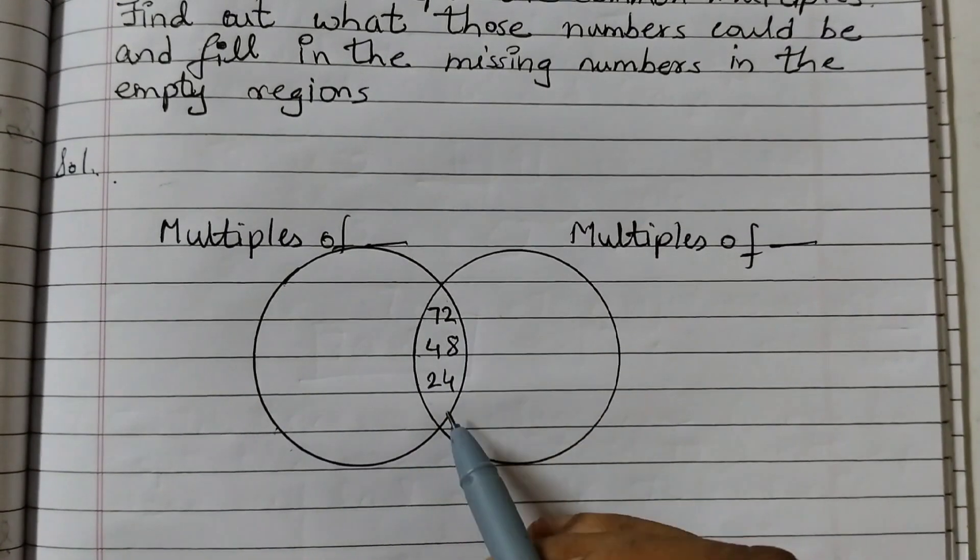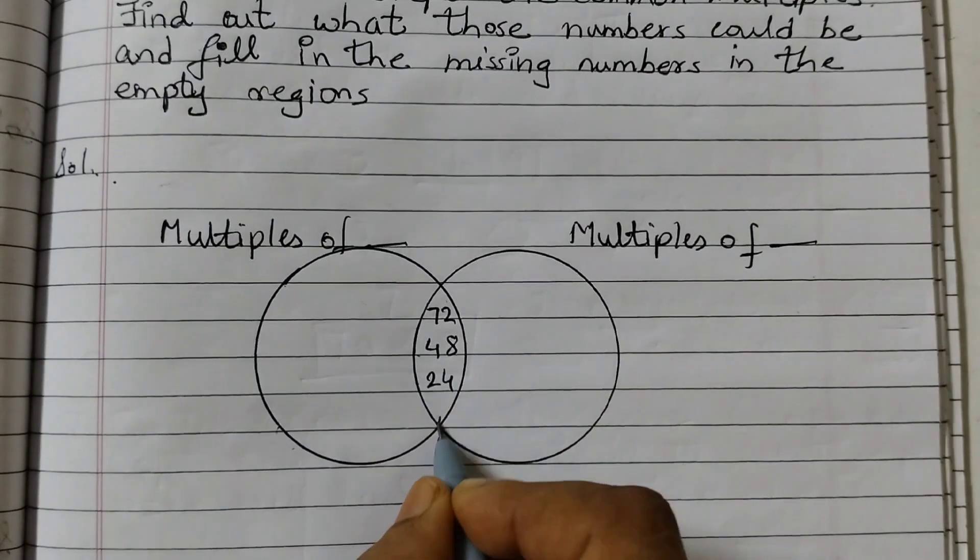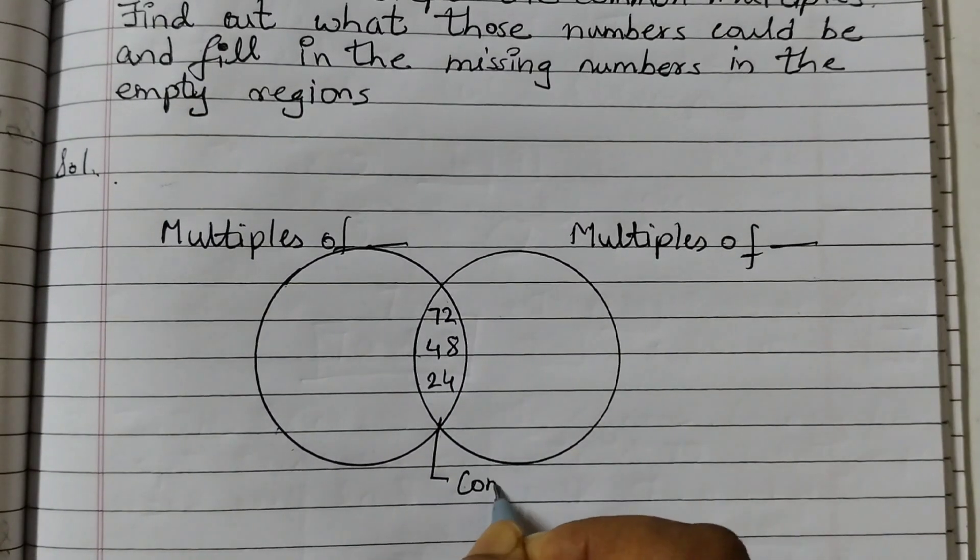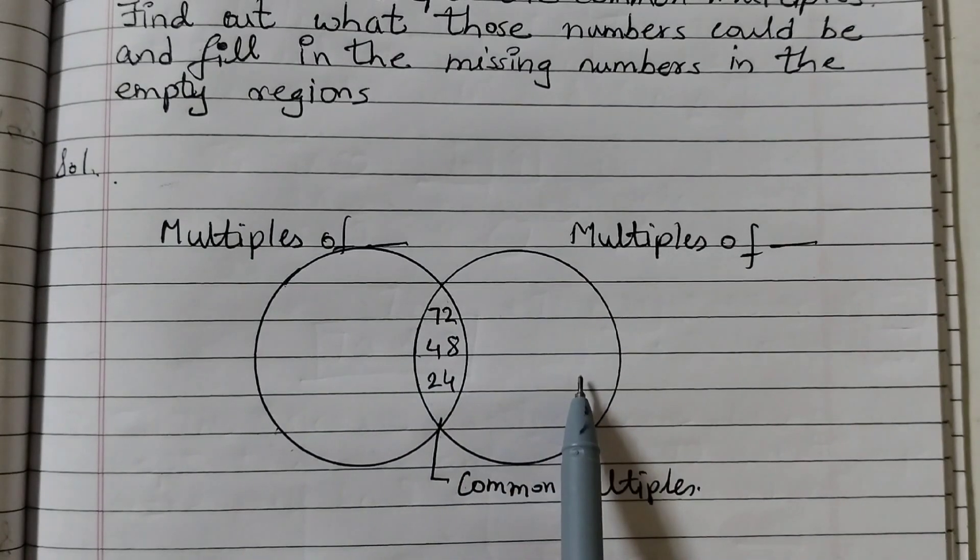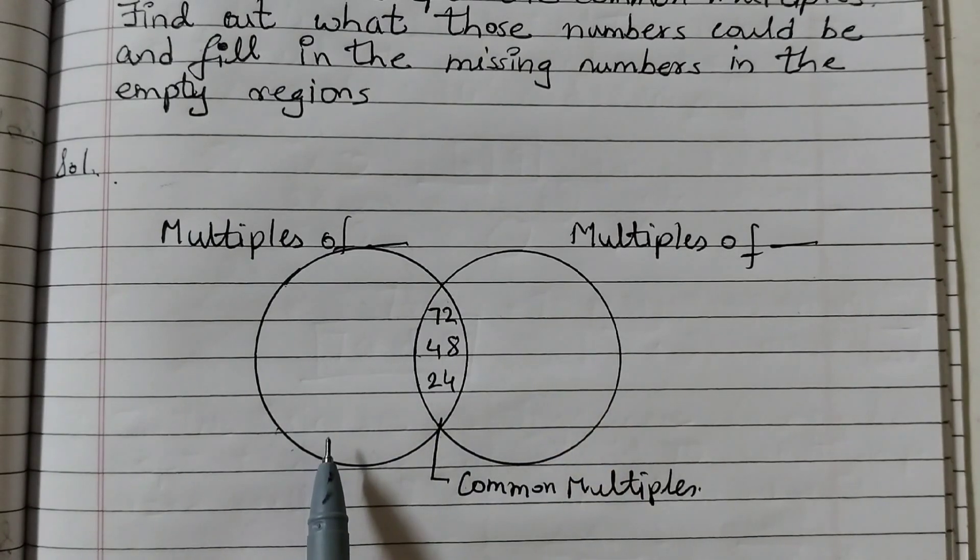The circles are given like this, the common multiples 24, 48, 72. These are the common multiples which are given and all these numbers on the left and right are erased. We need to find out two numbers whose multiples we can fill up here, and for this you must know the Idli Vada game. What we will do is take the smallest number 24 and write the factors of that.